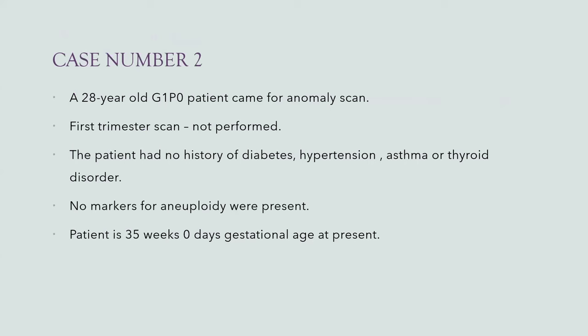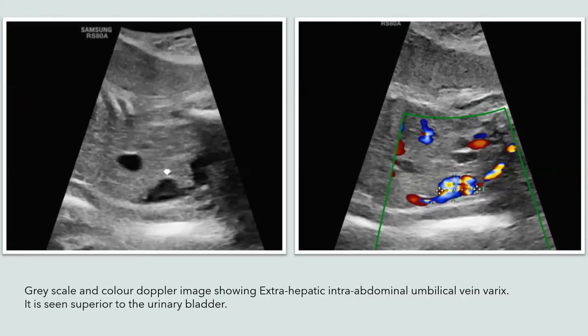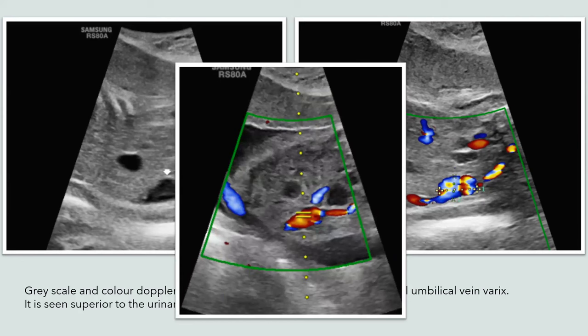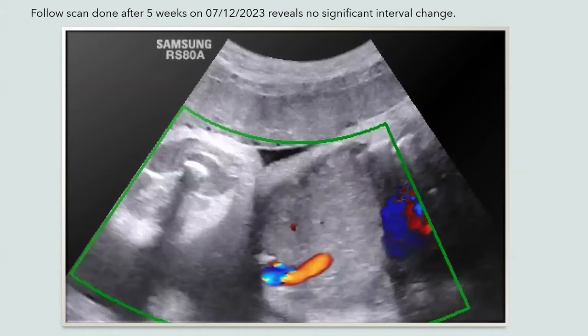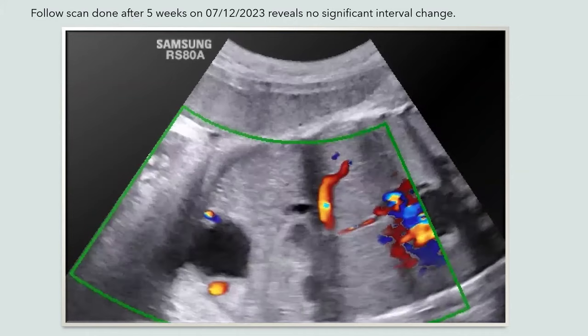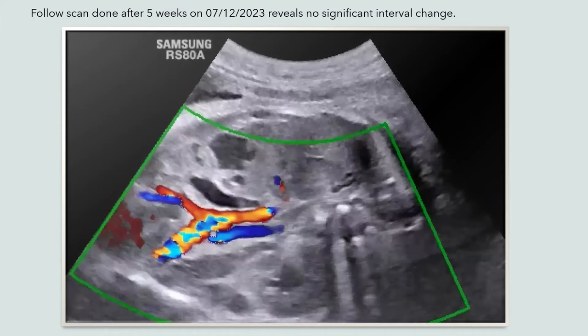Case number 2: a 28-year-old G1P0 patient came for an anomaly scan. The first trimester scan was not performed. The patient had no history of diabetes, hypertension, asthma, or thyroid disorder. No markers for IUFLD were present. Patient is at 35 weeks 0 days gestational age. Grayscale and color Doppler image showed extra-hepatic intra-abdominal umbilical vein varix, seen just superior to the urinary bladder. Follow-up scan done after 5 weeks revealed no significant interval change, no obvious thrombosis was seen, and the ductus venosus showed normal color flow.